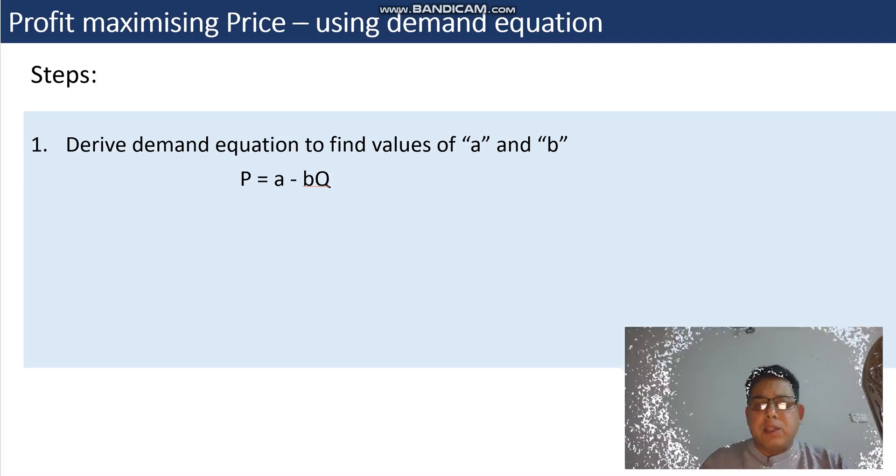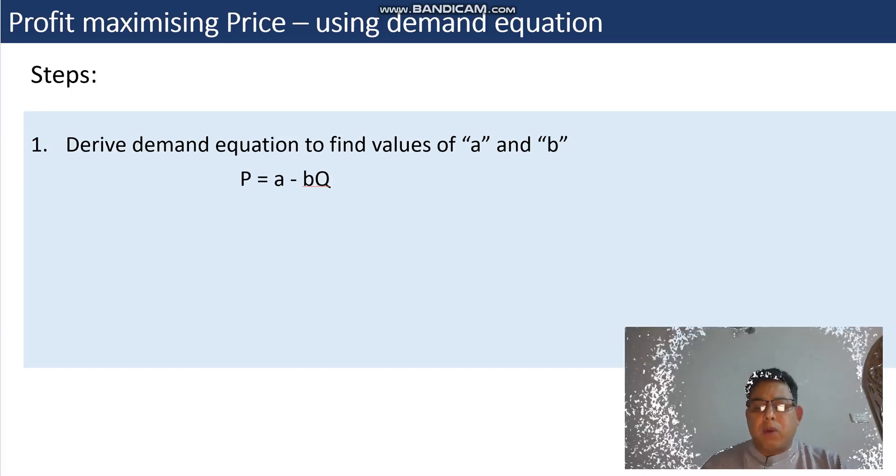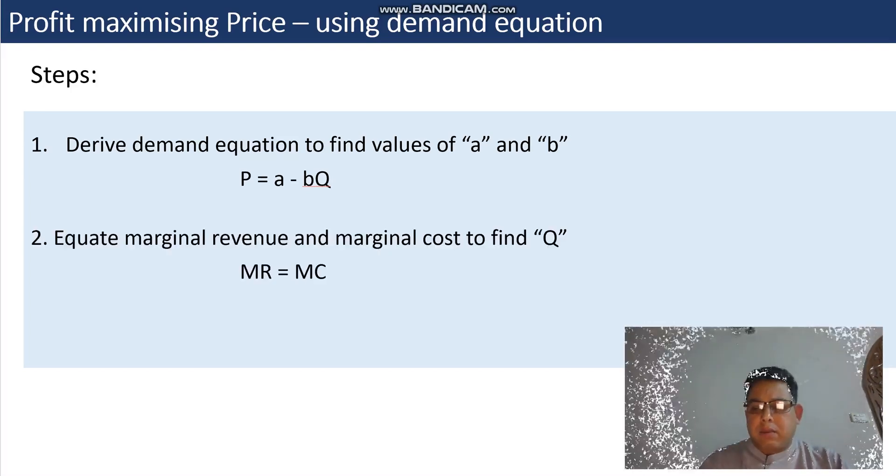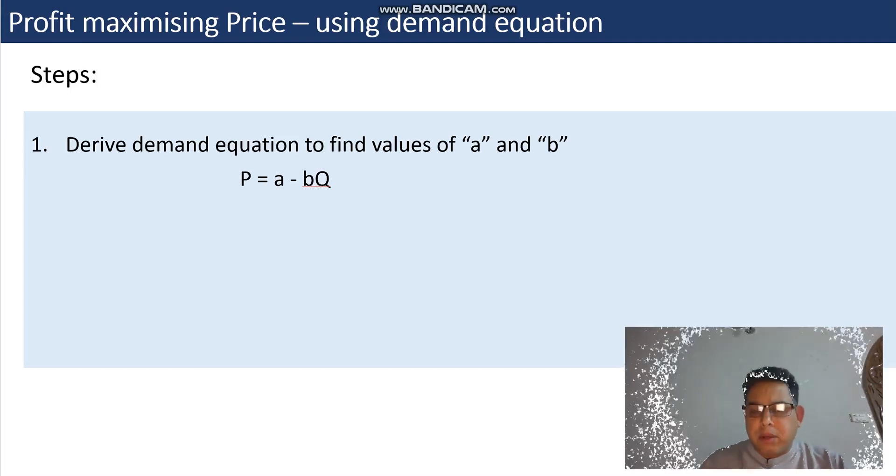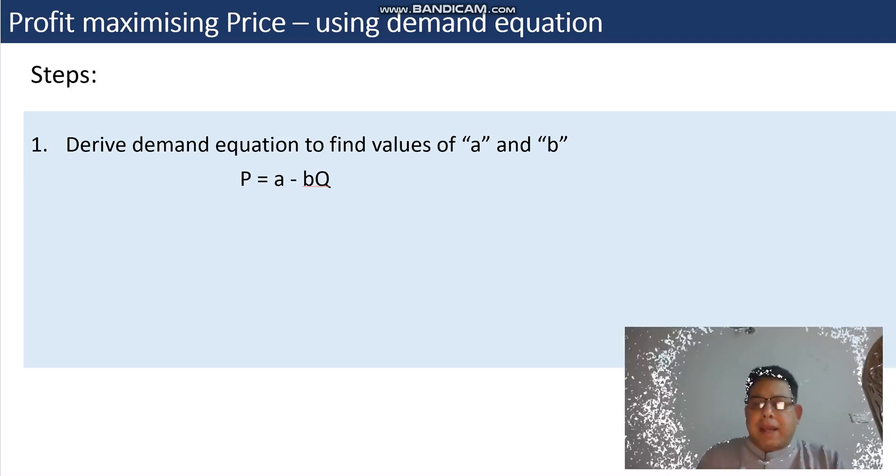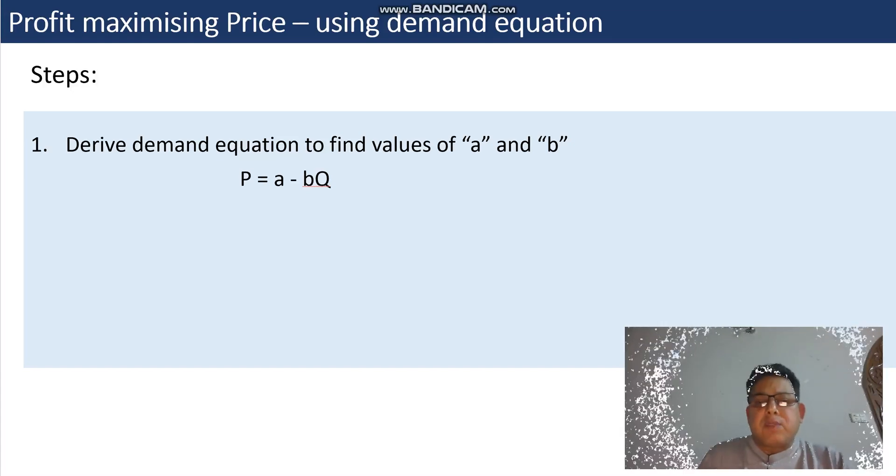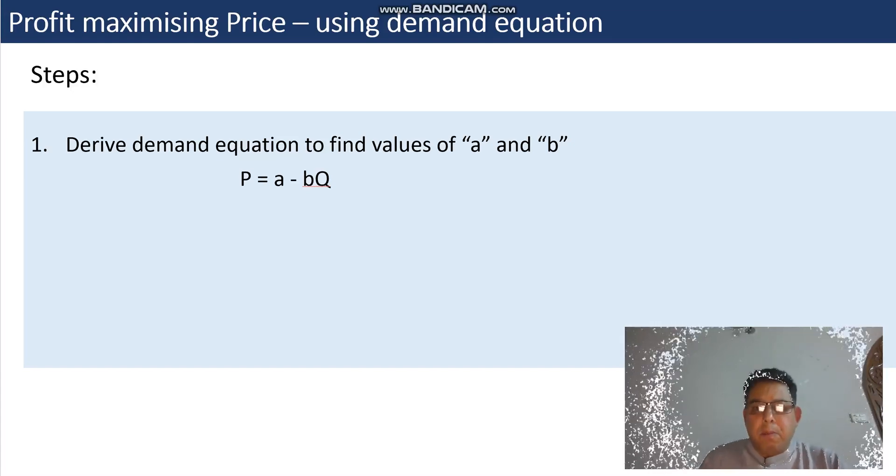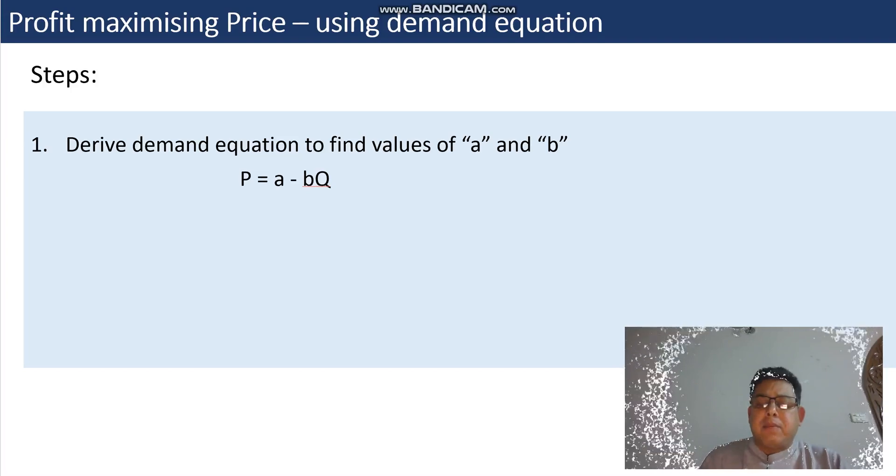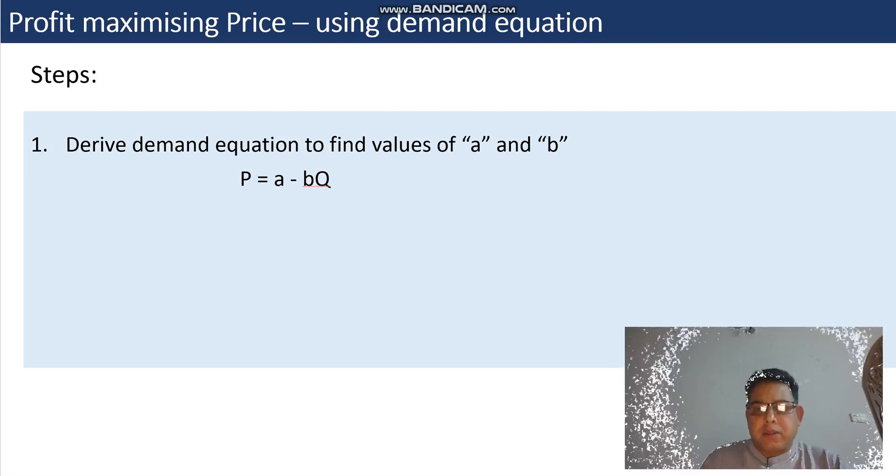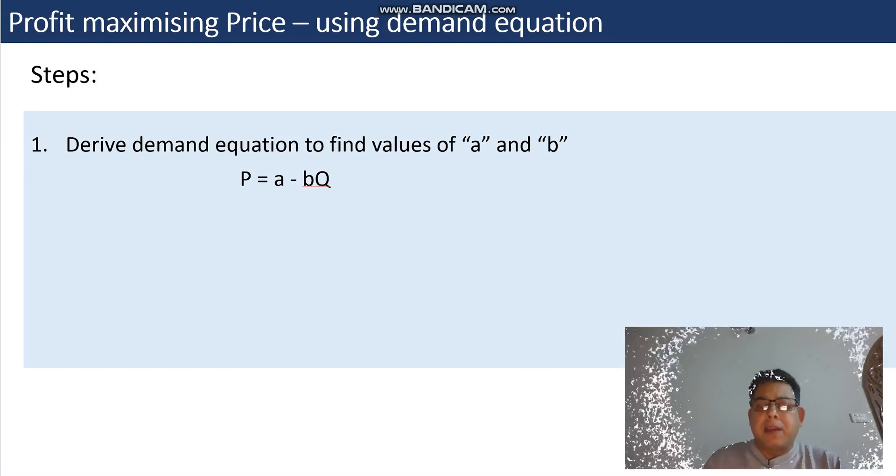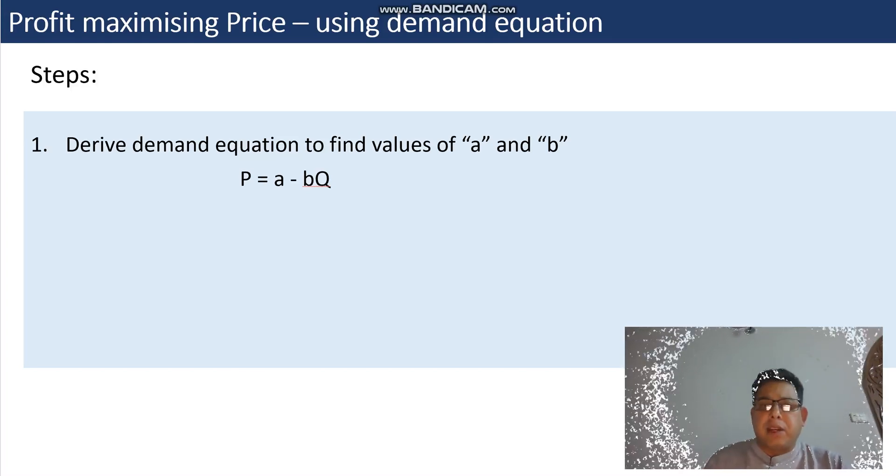The demand equation is P = a - bQ, where P is the price at quantity Q, a is the maximum price or very high price when the quantity equals zero, and b represents the slope or gradient of the demand curve, which is simply the relationship between price and quantity demanded.